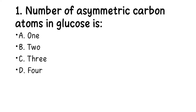The number of asymmetric carbon atoms in glucose is: A. 1, B. 2, C. 3, D. 4. The right answer here is D. We have 4 asymmetric carbon atoms in a glucose molecule.